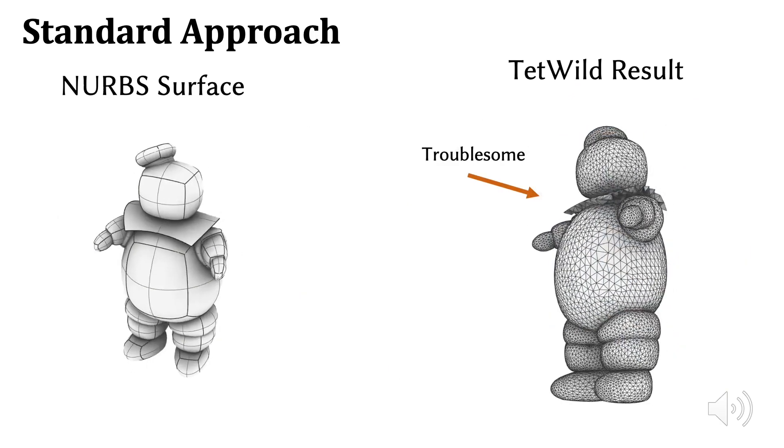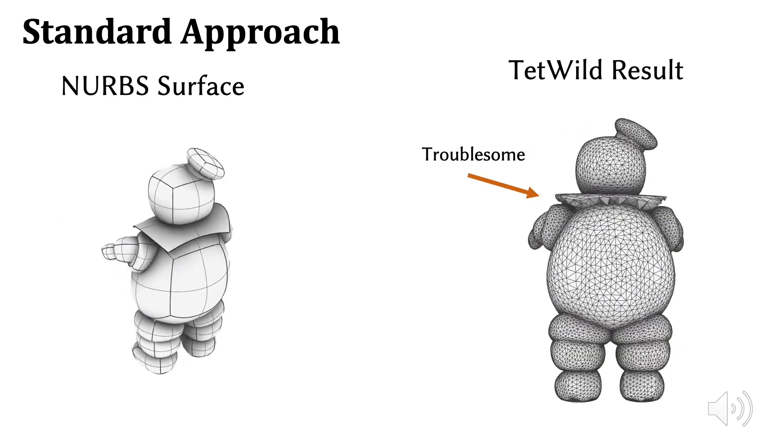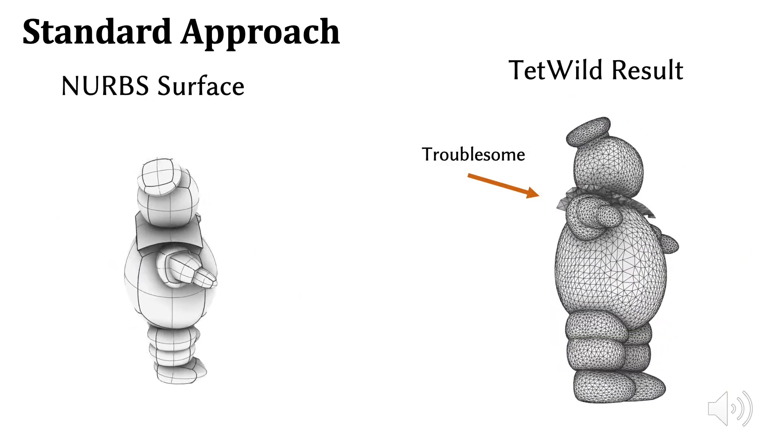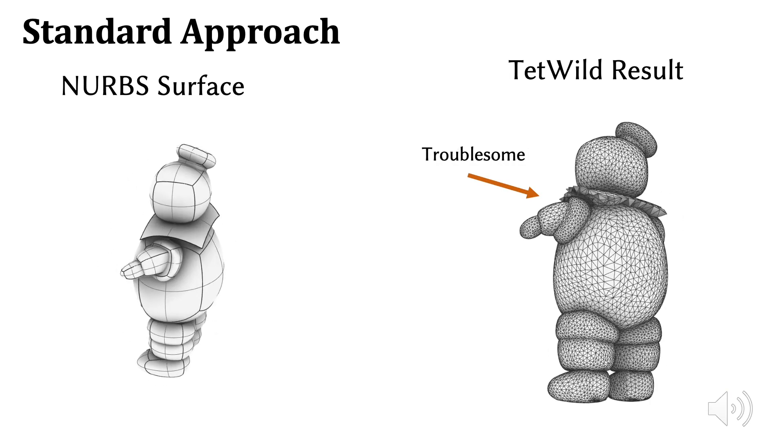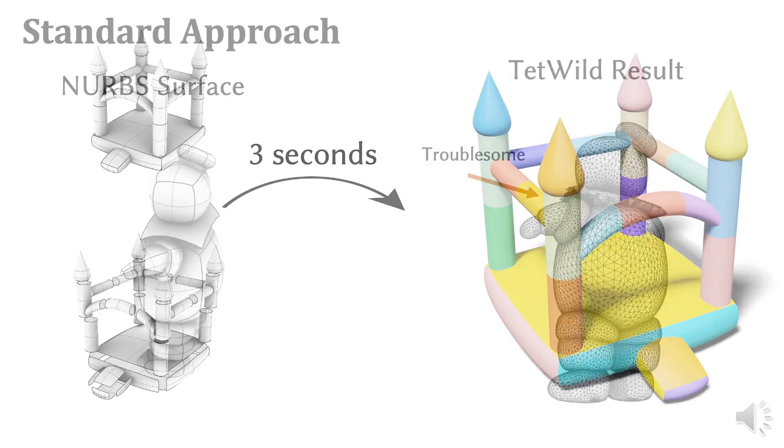It also introduces hidden restrictions on model creation. Here the artist wasn't aware that Tetwild cannot handle codimensional features like the character's collar, leading to a troublesome output.